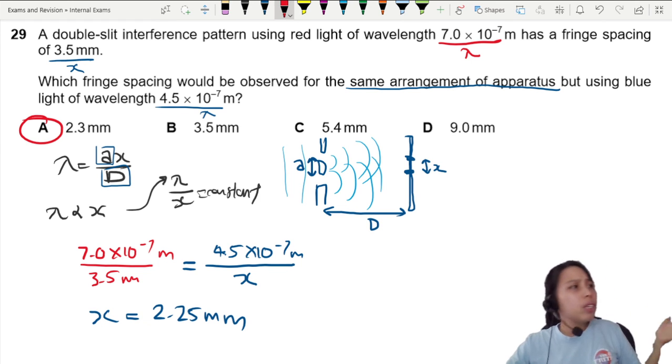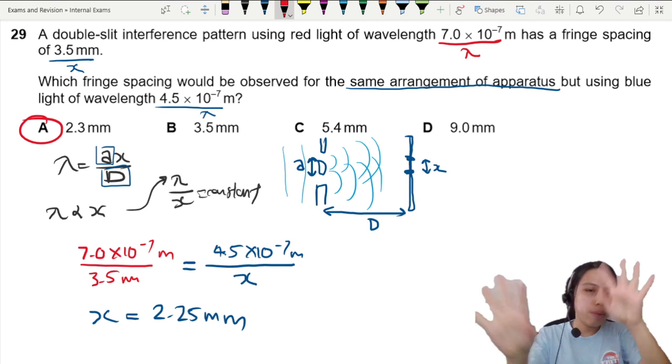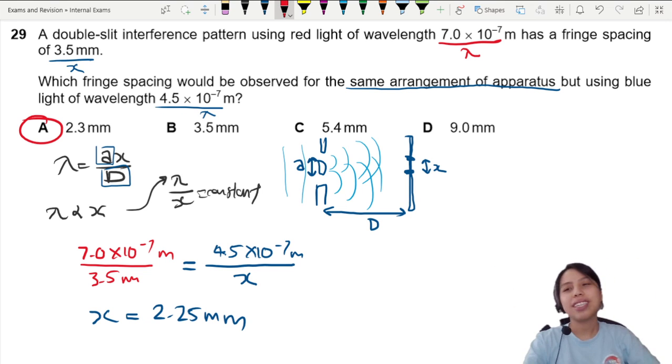You can't find that, or you can calculate a and d and then plug in again, can also, whatever method you want to use. All right, so that's all for this double slit question.